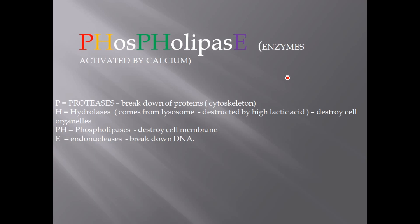Hydrolytic enzymes come from the lysosomes, which are destroyed by the lactic acid. These hydrolytic enzymes destroy cell organelles. Phospholipases are also activated by calcium and destroy the cell membrane. This is a serious condition because the hydrolytic enzymes and other intracellular contents can penetrate into the circulatory system, reaching various organs and causing many clinical manifestations.